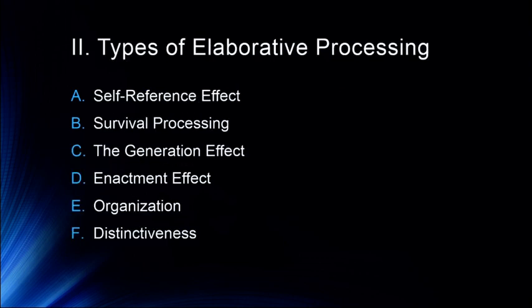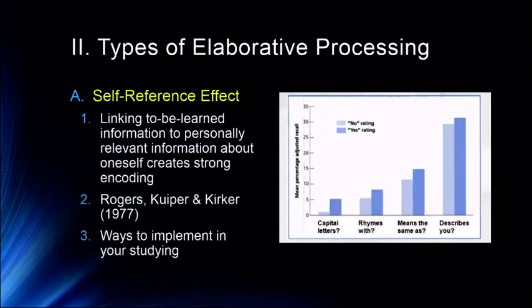We're going to talk about six different ways to think about elaborative processing. We'll talk first about the self-reference effect, then survival processing — an interesting type brought to us by Jim Nairn — then the generation effect, with a lot of work done by Neil Mulligan, the enactment effect, organization, and finally distinctiveness, which is an area I've done some work with along with Mark McDaniel and Ed Delage.